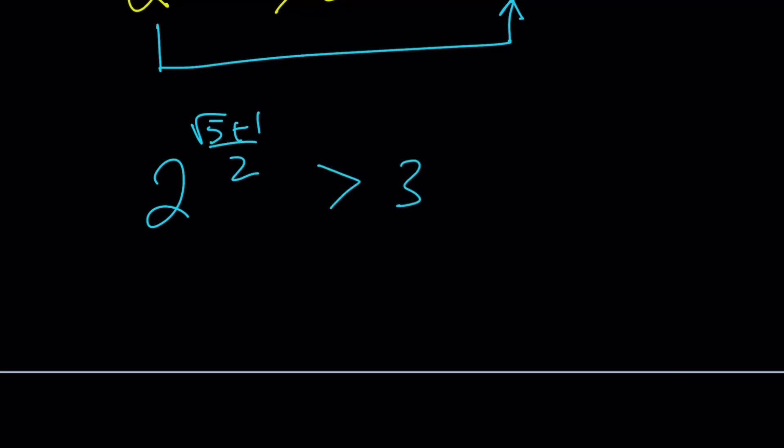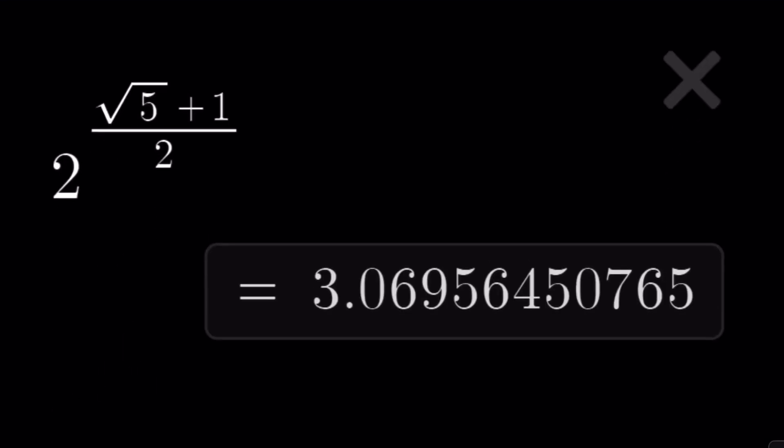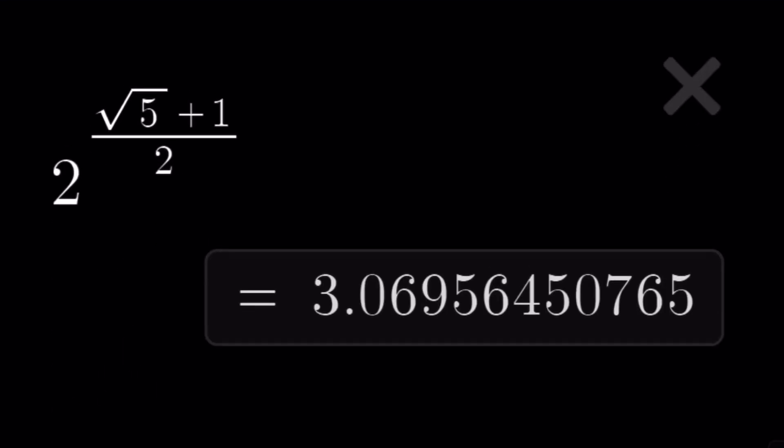Let me show you the numerical value real quick, and then we'll finish up. Here you go. 2^((√5+1)/2) is slightly bigger than 3. It's 3.06956450765...